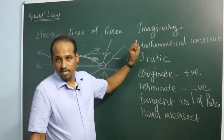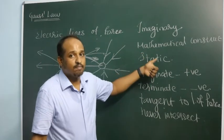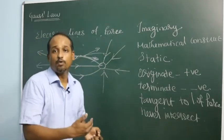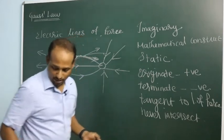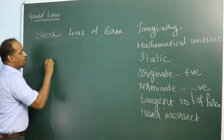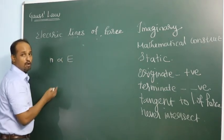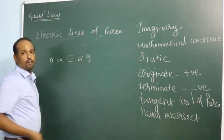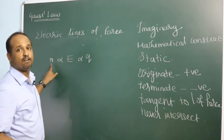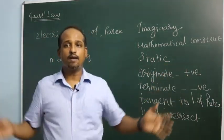Lines of force are imaginary paths traveled by a unit positive charge. They never intersect. They originate from a positive charge and terminate at a negative charge. Since they are a mathematical construct, they never flow — they are static. The more the electric field, the more the lines of force. If lines of force are crowded together, the electric field is stronger; if they are far apart, the field is weaker.